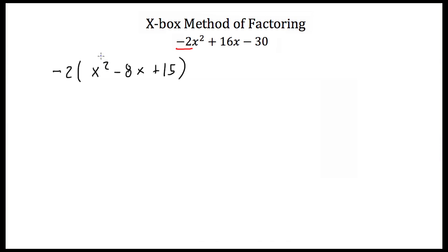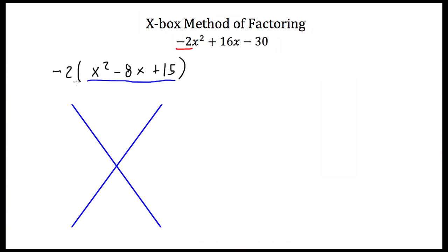Now that my leading coefficient on my quadratic is positive and I've factored out all my greatest common factors, I'm going to use the Xbox method of factoring on x squared minus 8x plus 15. To use the Xbox method, first you draw a big X. Then you take the coefficient in front of your x squared term — which in this case is 1 — and your constant term, 15, and multiply them together. You get 15, and you write that in the top part of your X.